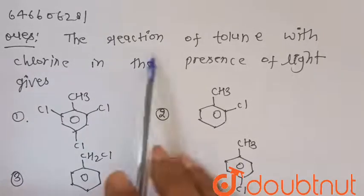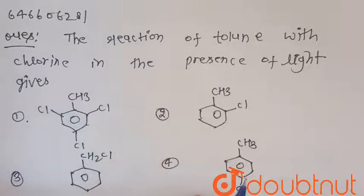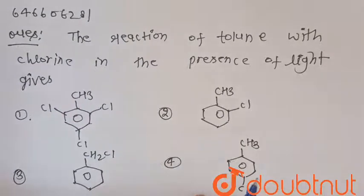Hello everyone, consider the given question. The reaction of toluene with chlorine in the presence of light gives. These four options are given. We have to find which one is correct.